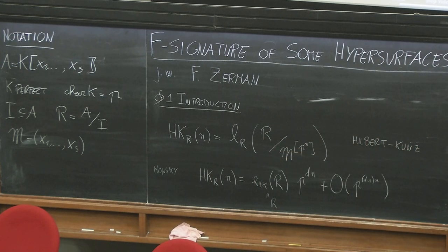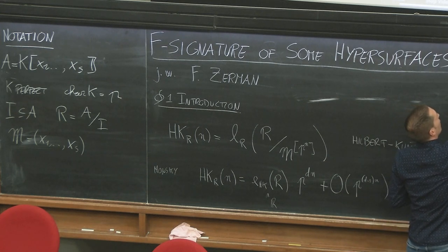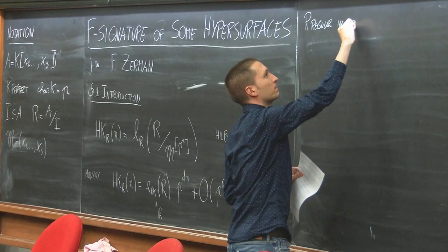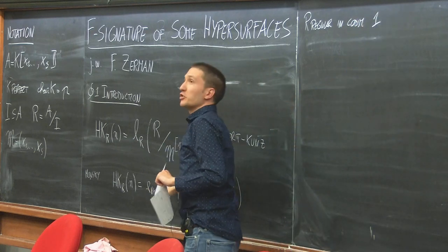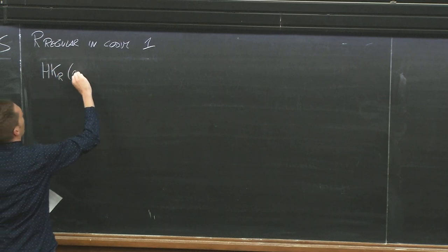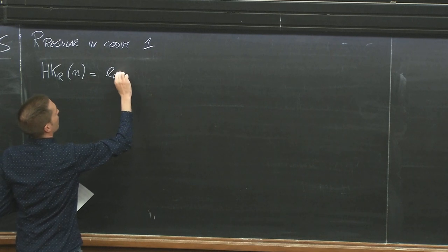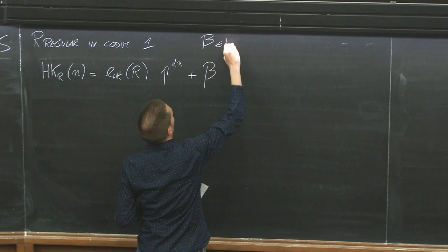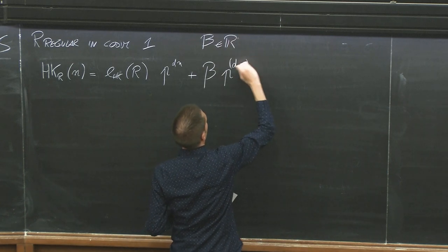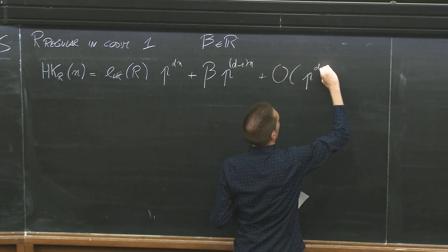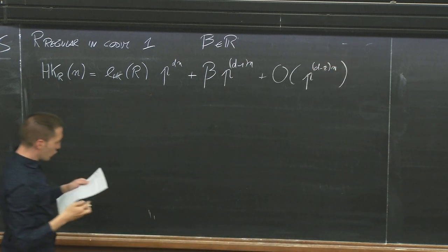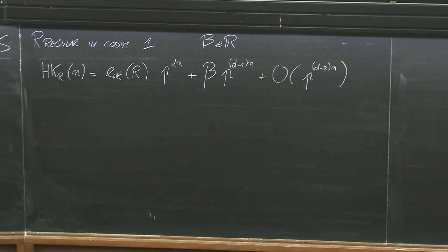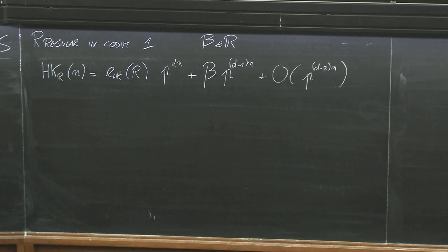One can do a little bit better if R is also regular in codimension one. In that case, not only do we have a leading coefficient, but we have a second term: HK_R(N) = e_{HK} · p^{DN} + β · p^{(D-1)N} + O(p^{(D-2)N}), for some real number β. This is due to Huneke, McDermott, and Monski in the normal situation, and later generalized to regular in codimension one by Chan and Curano. Examples by Hahn and Monski show that in general one cannot expect a third coefficient to exist.